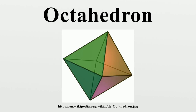The Schoenhardt polyhedron is a non-convex polyhedron that cannot be partitioned into tetrahedra without introducing new vertices. More generally, an octahedron can be any polyhedron with eight faces. The regular octahedron has six vertices and twelve edges, the minimum for an octahedron, and may have as many as twelve vertices and eighteen edges. There are 257 topologically distinct convex octahedra, excluding mirror images.